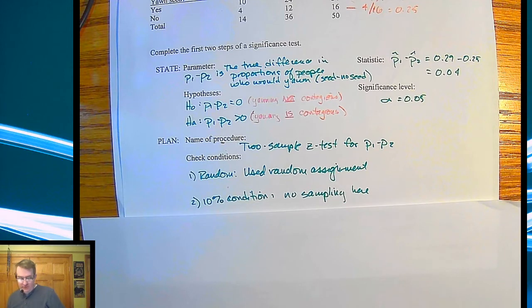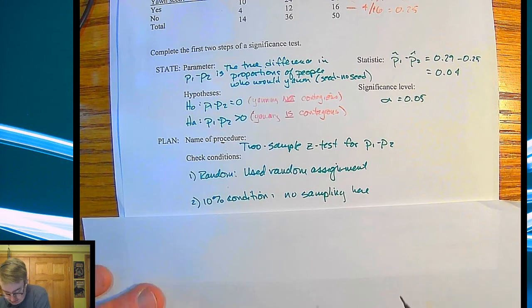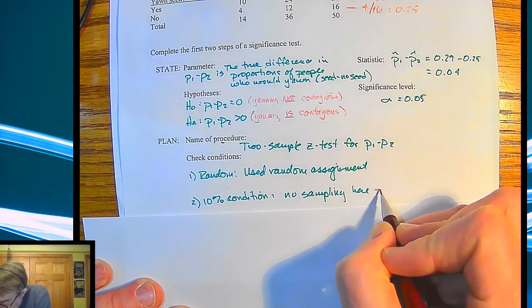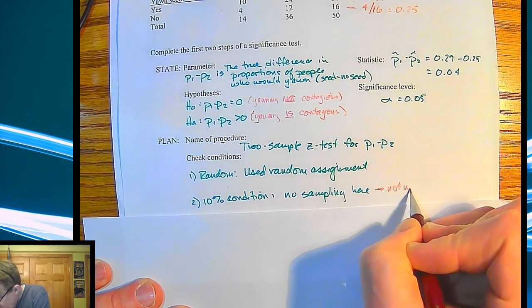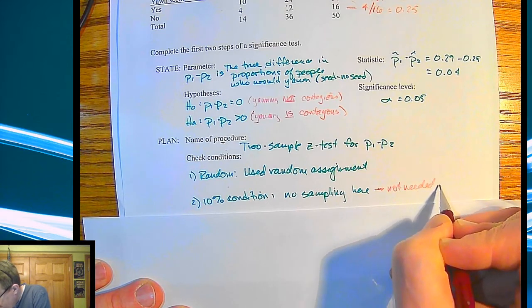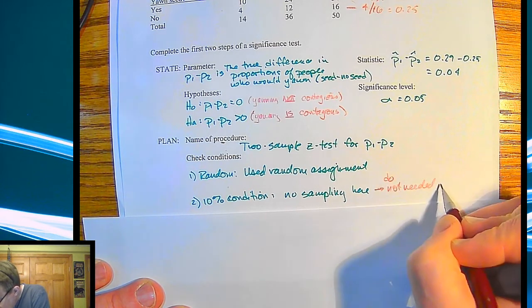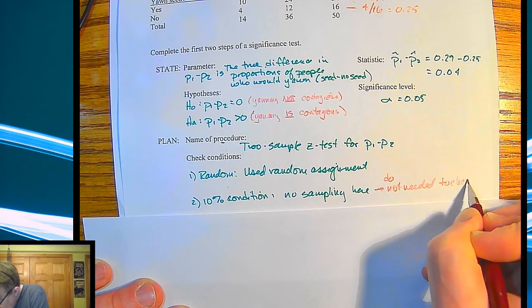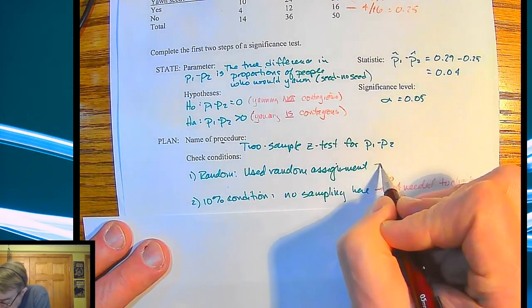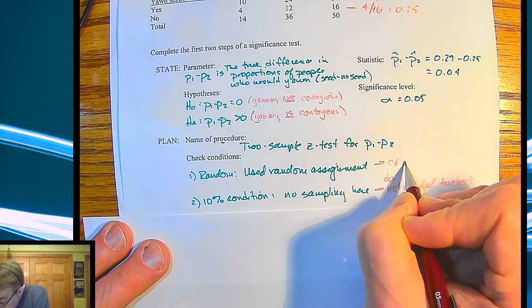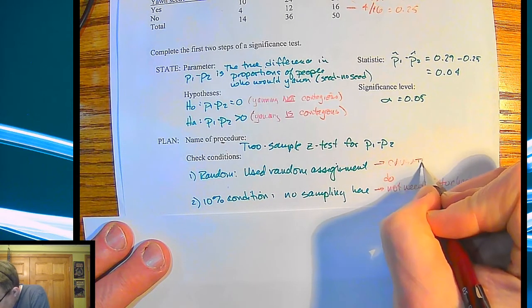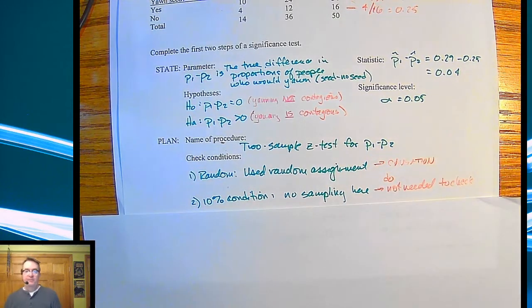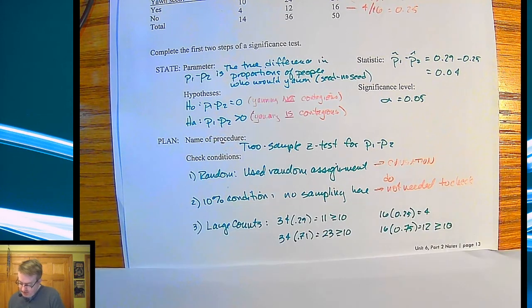10% condition. We have no sampling here, so we don't need to check this. Do not need to check. And remember what we're going to do up here, since we're using random assignment, that's going to lead us to say causation. And then for step three, large counts.